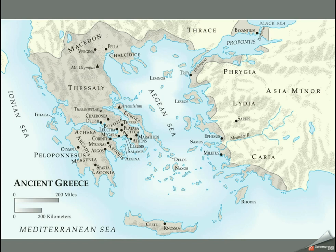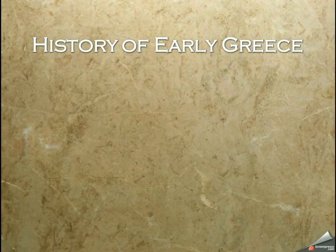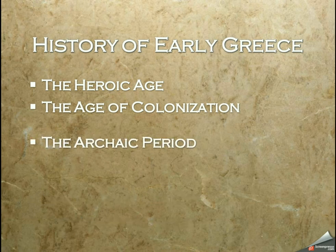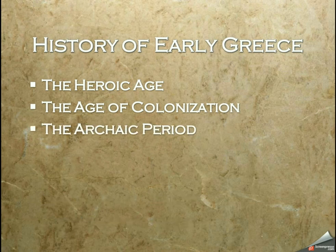As these people grow up and mature, the next area of activity is down in the far south on the island of Crete, specifically in the city of Knossos — the home of the fabled King Minos. The history of early Greece can be divided into three basic periods: the heroic age, the age of colonization, and the archaic period.